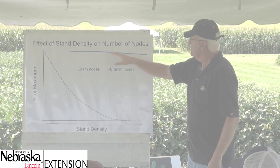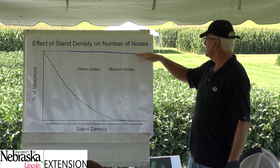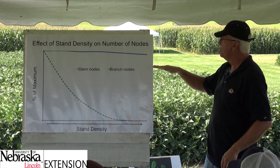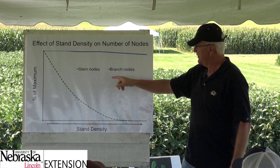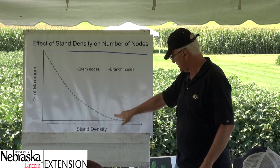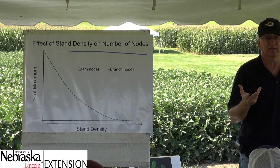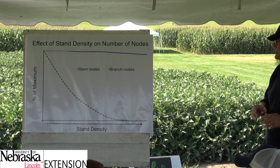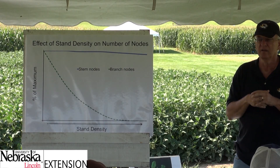This is a graph relating stand density to the number of nodes on the main stem and the number of nodes on the branches. There's almost no effect on main stem nodes, but the number of nodes on branches changes dramatically. That's what we talked about, and this is one of the reasons it's very difficult — as you crowd those plants together — to increase yield.